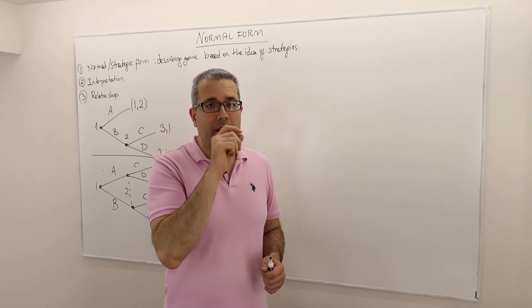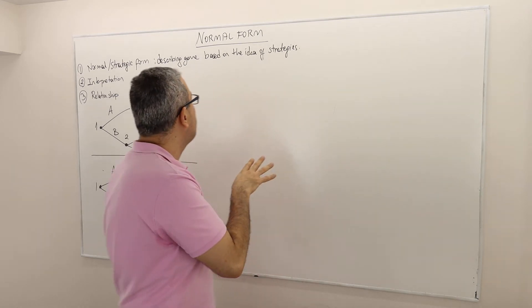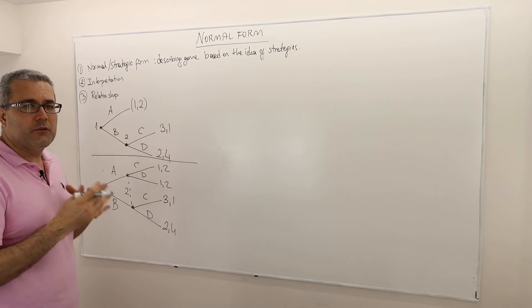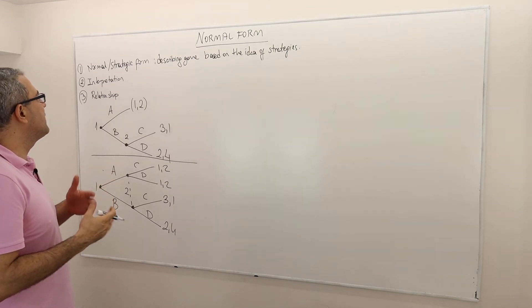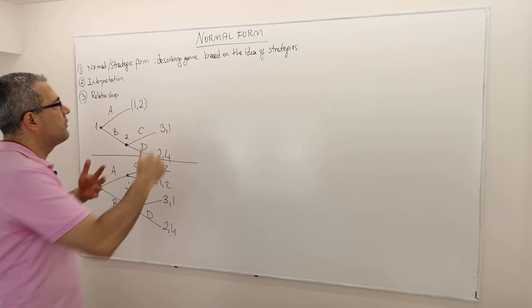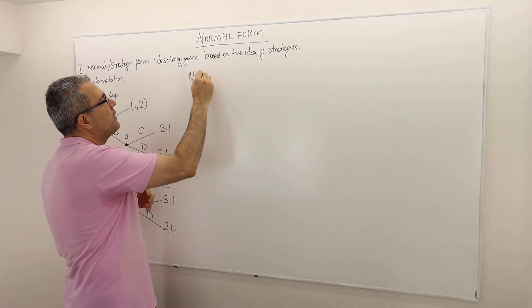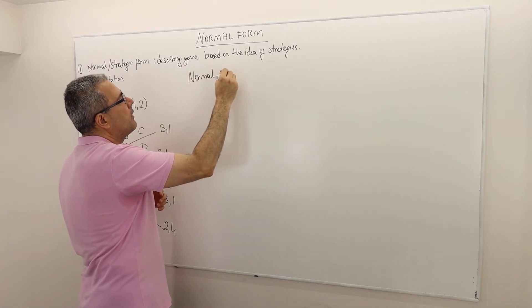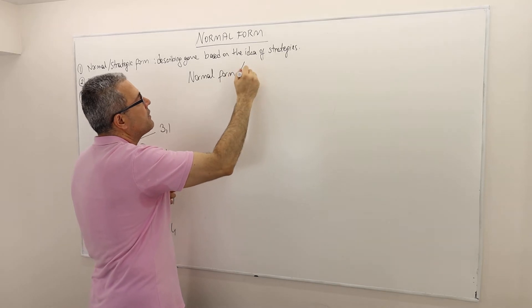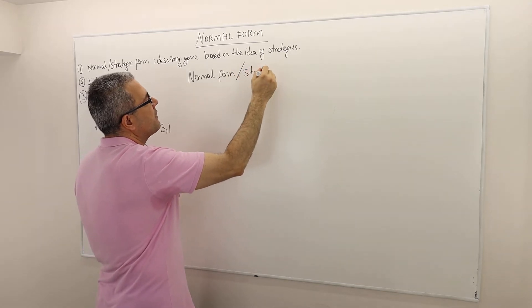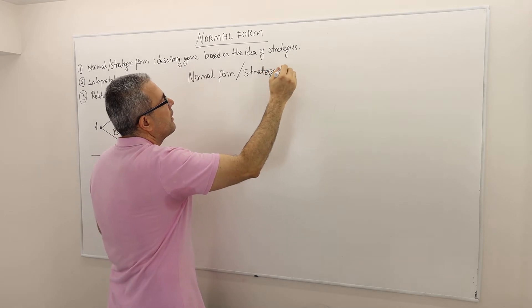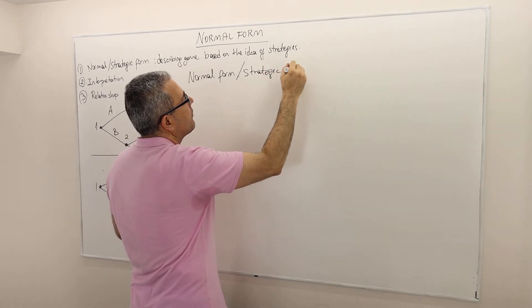Welcome back. In this episode I'm going to talk about the interpretation of strategic form representation, also called normal form representation — they mean the same thing.